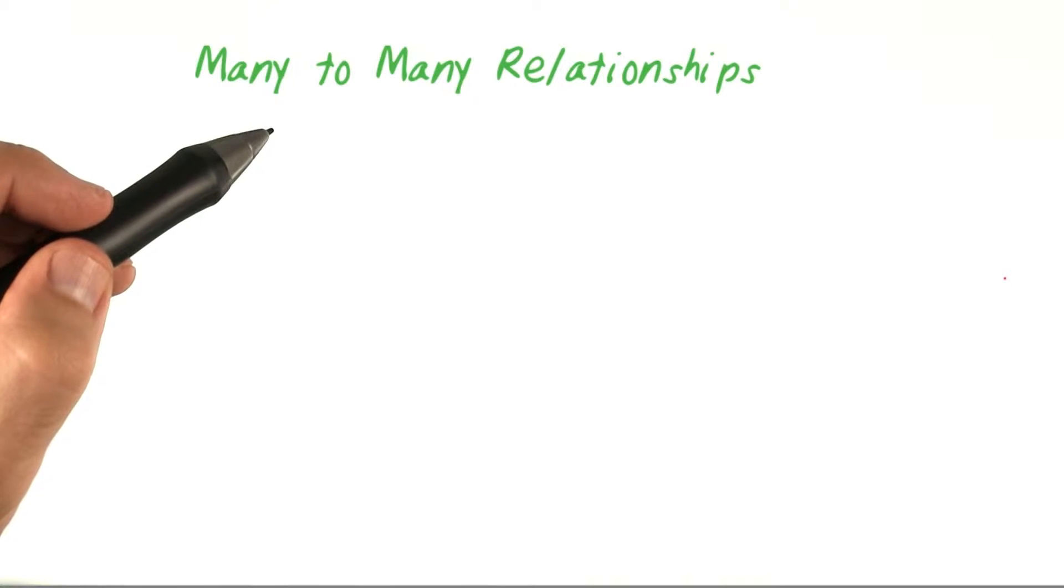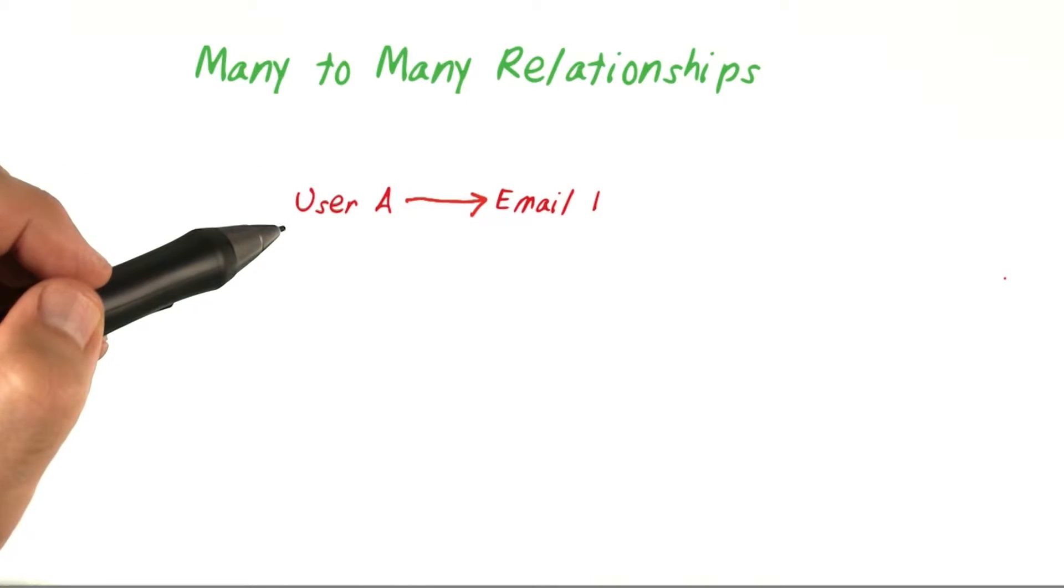An example of a one to one relationship is the user and their email address. We say one to one because each user has one email address and each email address is associated with one user. At least in shopping list plus plus, this is how it was.